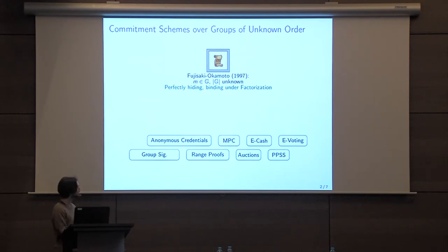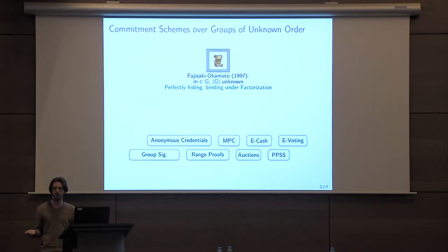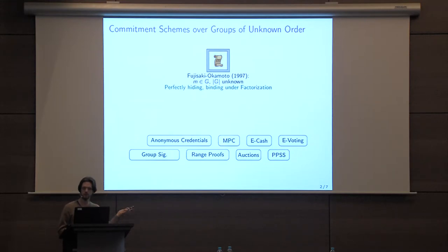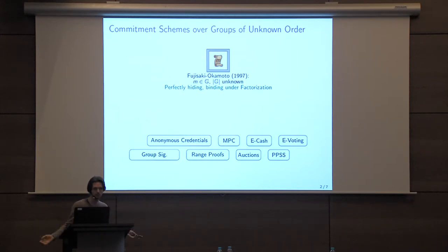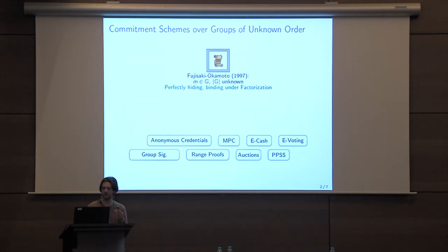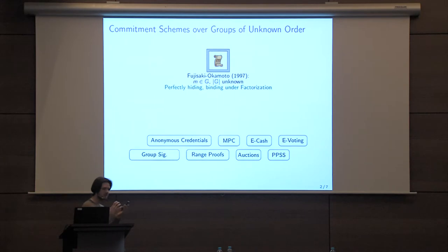But another reason — maybe the core reason — is that if you can commit to an element over a group of unknown order, intuitively the committer should be bound to the value over the integers. Because if later he is to reveal the committed value, he cannot reduce it modulo the order of the group, which is unknown. So he will somehow have to reveal this value over the integers. This has many applications when you want to work with systems that deal with real integer values.